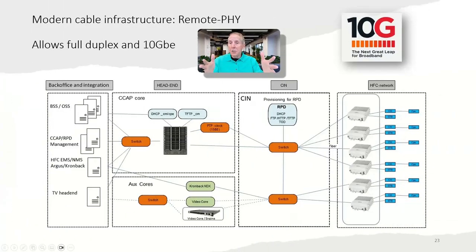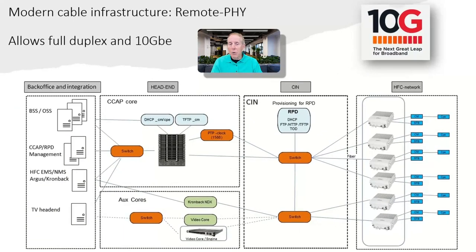This architecture that you see before you is the latest, greatest architecture for cable companies. Very few cable companies are using this structure right now. This is known as remote PHY, remote physical. It is getting rid of a lot of the old components and setting the stage for full duplex, 10 gigabit to the house.